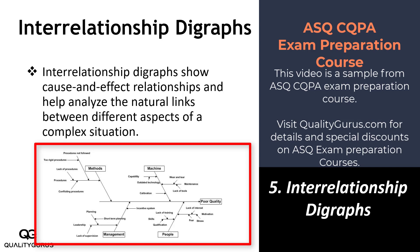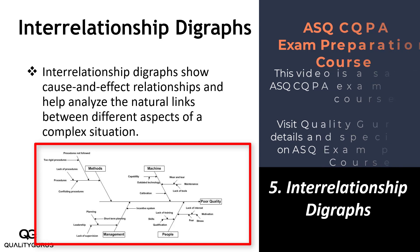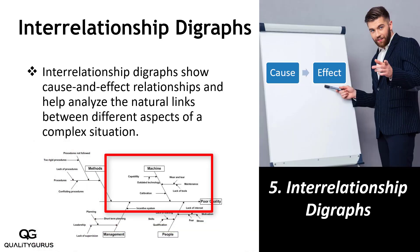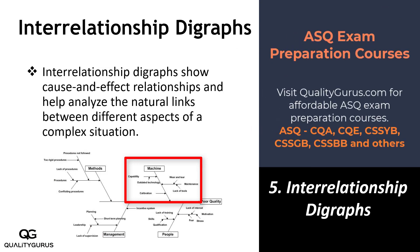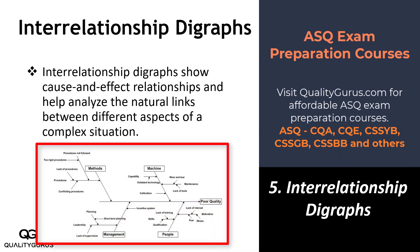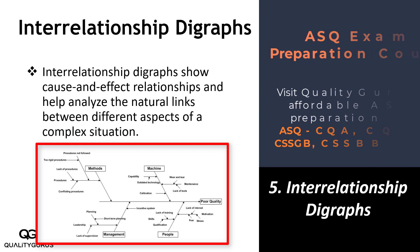Here you have an example of a fishbone diagram or the cause and effect diagram for poor quality. Poor quality could be because of machine, method, management, or people. For example, under machine, poor quality could be because of maintenance, and the sub-causes of that are wear and tear and lack of tools. We have talked about this cause and effect diagram previously.